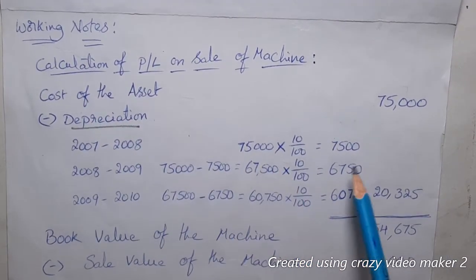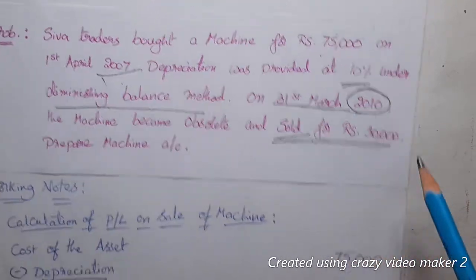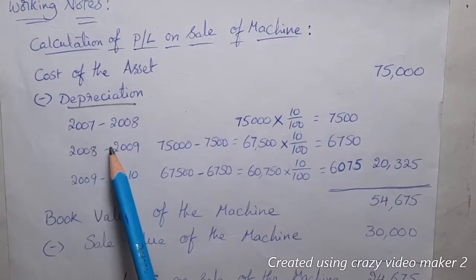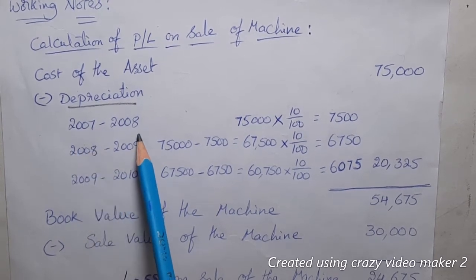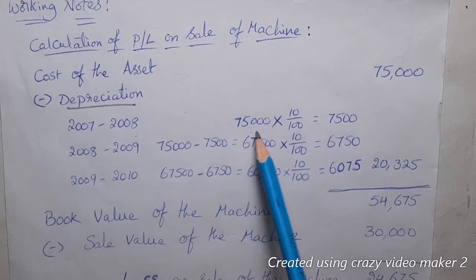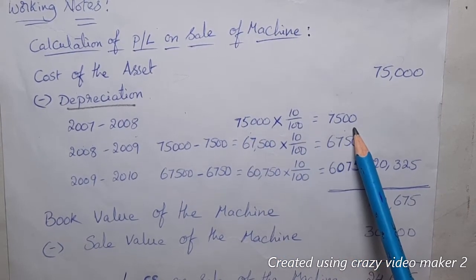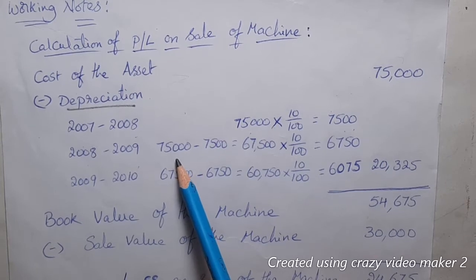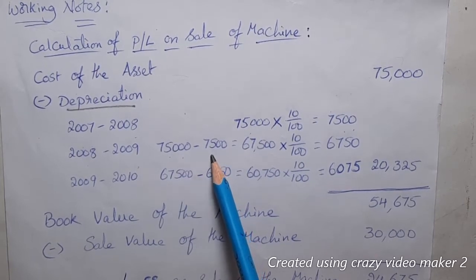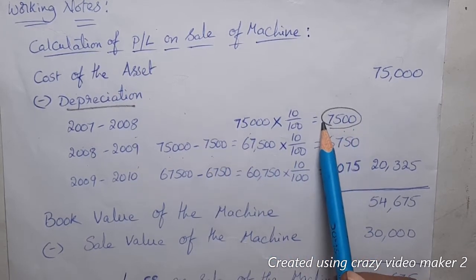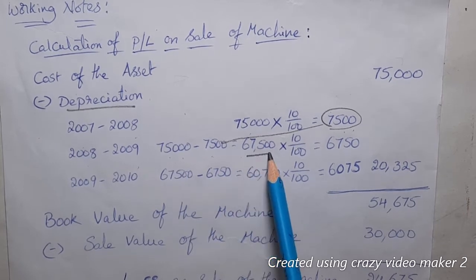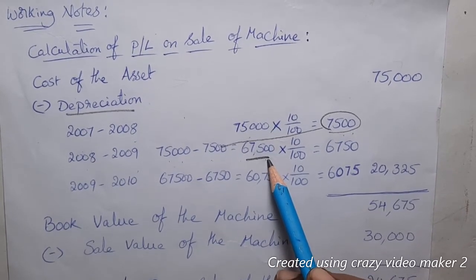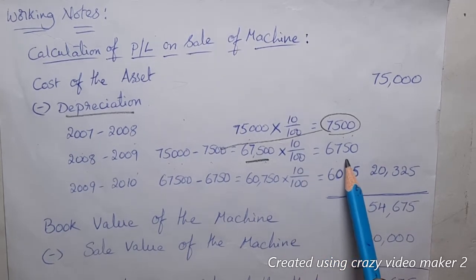First, the cost of the asset is ₹75,000. In Year 1 (2007-08), 10% depreciation on ₹75,000 gives ₹7,500. The diminished balance at the end of Year 1 is ₹75,000 minus ₹7,500 = ₹67,500. In Year 2 (2008-09), 10% of ₹67,500 gives depreciation of ₹6,750.